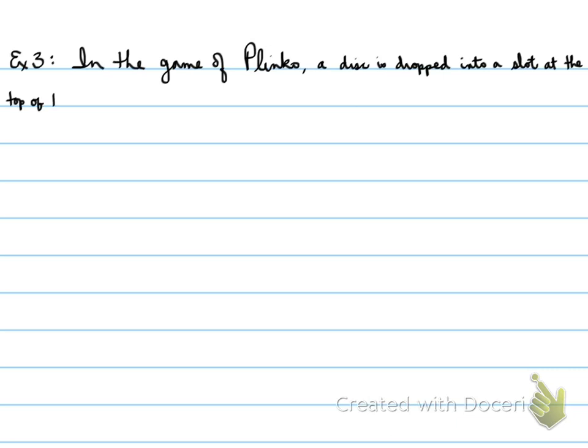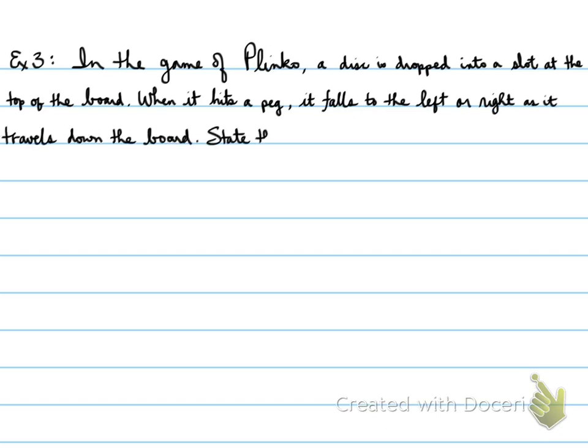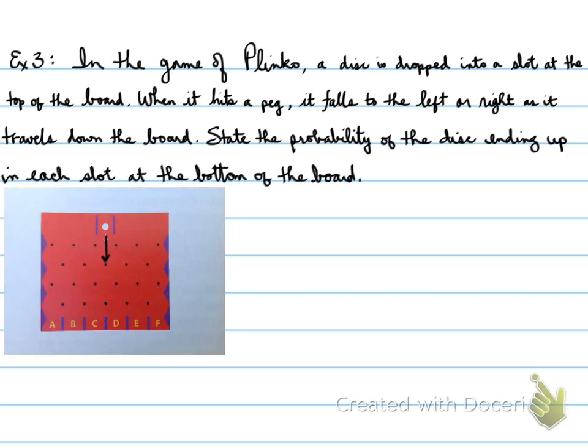Okay, next, we've already dealt with the outcomes, let's do one more. In the game of Plinko, a disc is dropped into a slot at the top of the board. When it hits a peg, it falls to the left or right as it travels down the board. State the probability of the disc ending up in each slot at the bottom of the board.